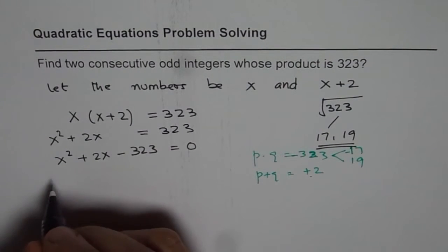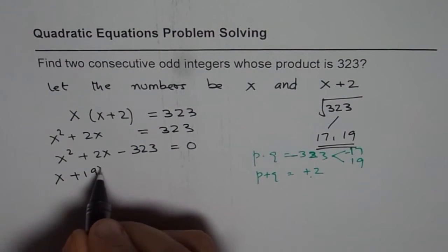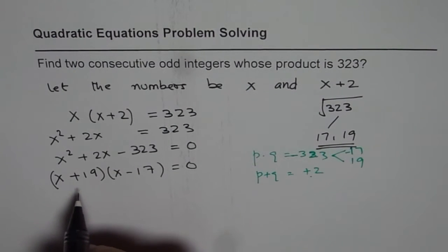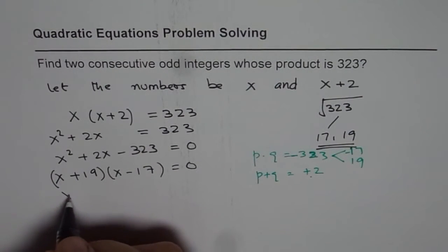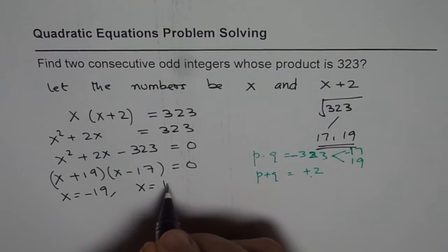So we can factor this as x plus 19 times x minus 17 equals to 0. And now this can be 0 only if x is equals to minus 19 or x is equal to plus 17.